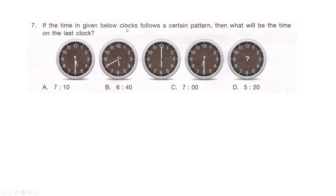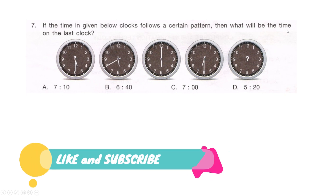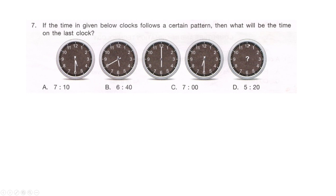Our next question: if the times on the given clocks follow a certain pattern, what will be the time on the last clock? Is it option A: 7:10, option B: 6:40, option C: 7:00, or option D: 5:20? Take your time for this time question.